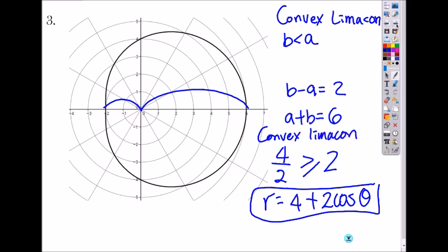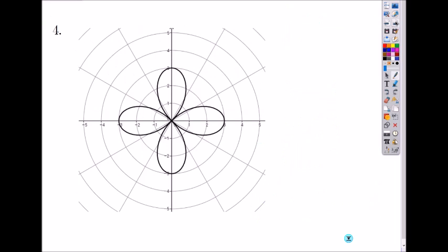Number four. Oh, what is this? It is rose with how many petals? Four petals. And as I said, if it starts on the positive polar axis, x-axis, then it must be what? Cosine.